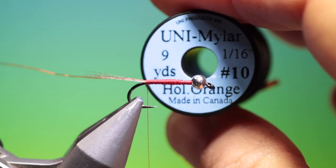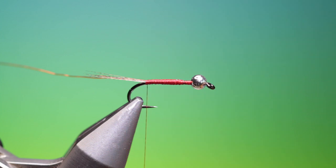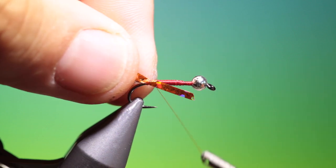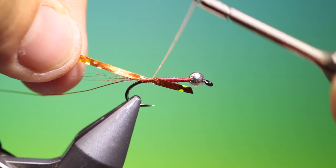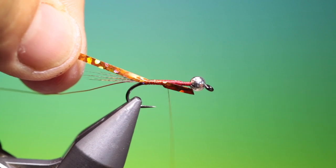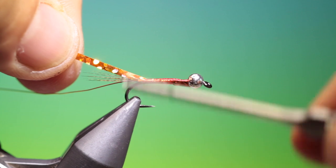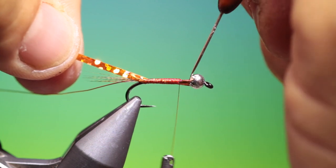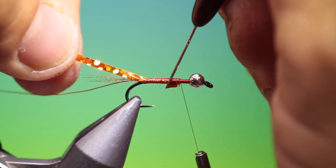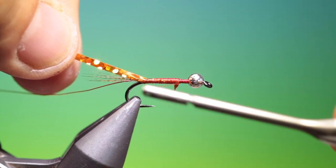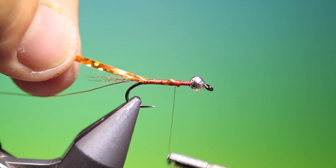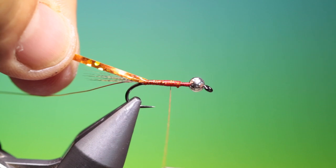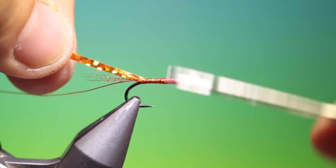Then I'm using some Hot Orange Holographic Mailer Tinsel. I'm going to just tie this in at the tail base and go up the hook shank. When we get to there, fold that over and secure it just to build up that taper and give it extra purchase.